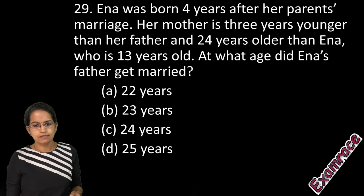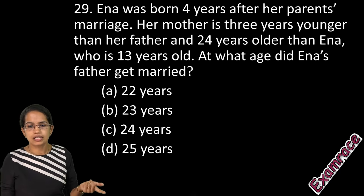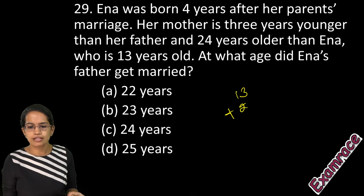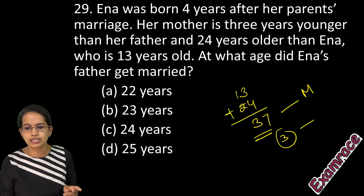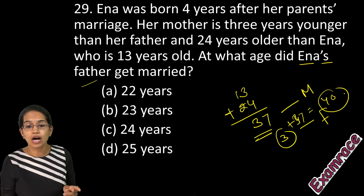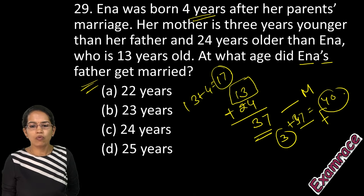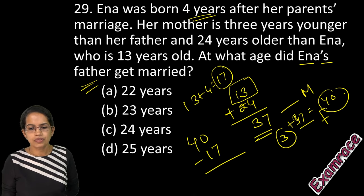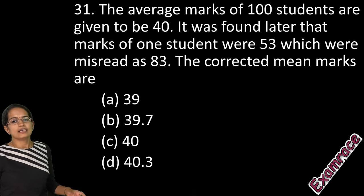The next question: Ena was born 4 years after her parents got married. Her mother is 3 years younger than her father and 24 years older than Ena. Ena is 13 years old now, so the mother's age is 13 + 24 = 37. Father's age is 37 + 3 = 40. Since Ena is 13 and was born 4 years after marriage, 13 + 4 = 17 years have passed since marriage. Father's age at marriage: 40 − 17 = 23 years.